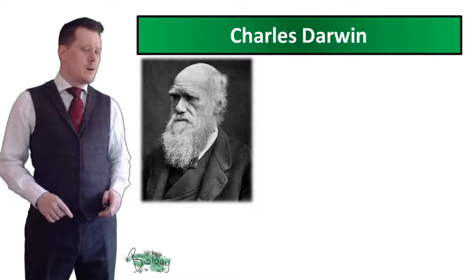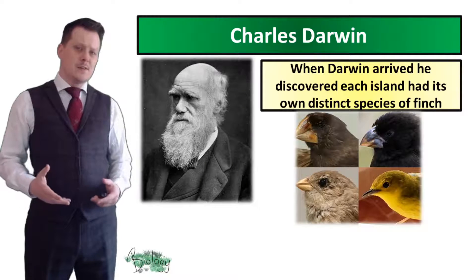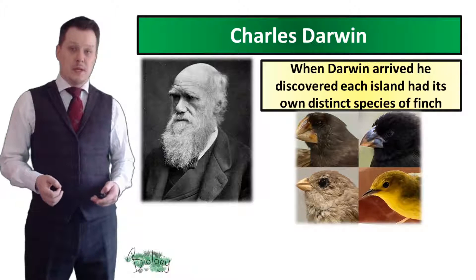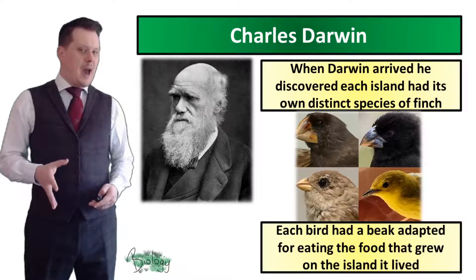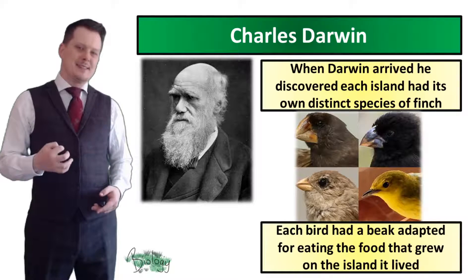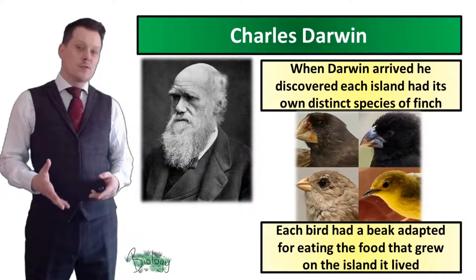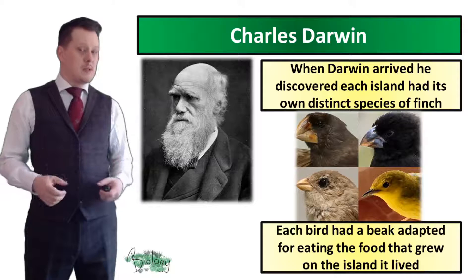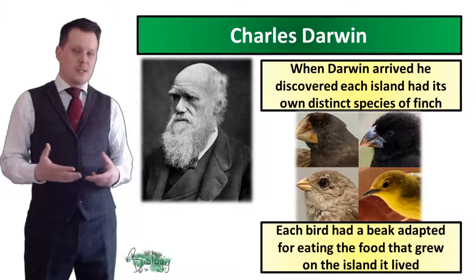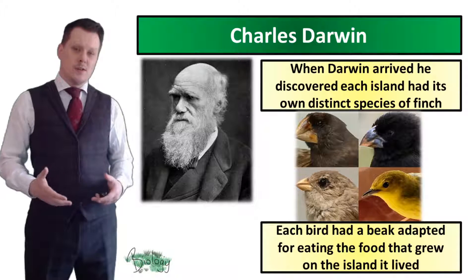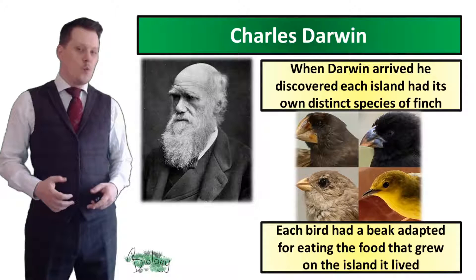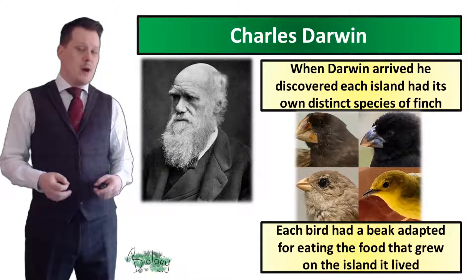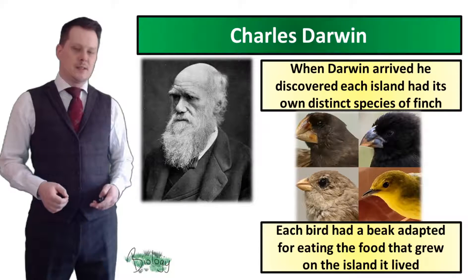When Darwin got to the Galapagos Islands he discovered that each island had its own distinct species of finch, and that each bird had a beak adapted for eating the food that grew on the island it lived on. Birds with bigger beaks lived on islands with lots of fruits and nuts, whereas birds with smaller, pointier beaks lived on islands where there were more bugs and grubs to eat.